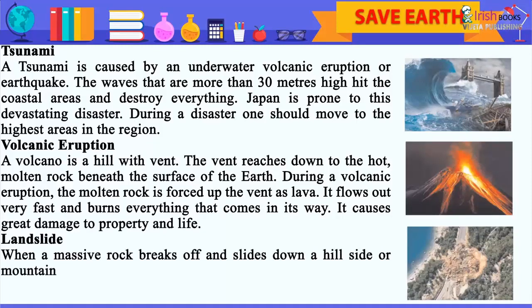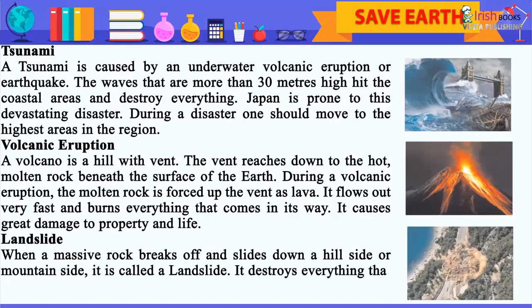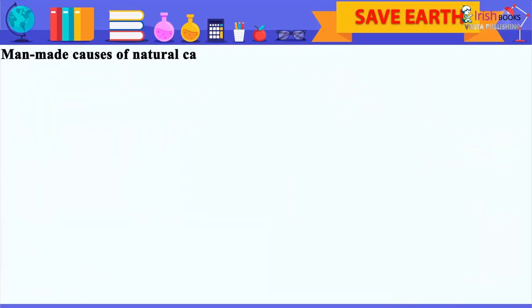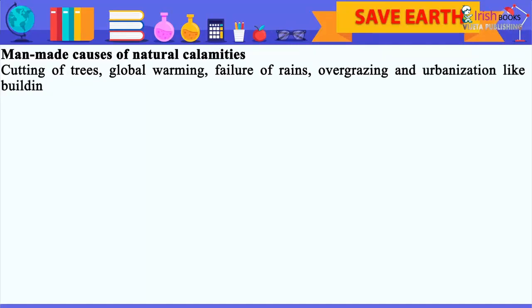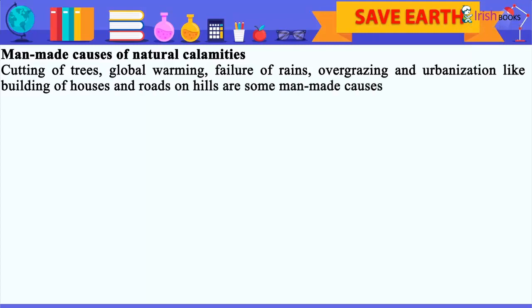Landslide: When a massive rock breaks off and slides down a hillside or mountainside, it is called a landslide. It destroys everything that comes in its path. Man-made causes of natural calamities include cutting of trees, global warming, failure of grains, overgrazing, and urbanization such as building houses and roads on hills.